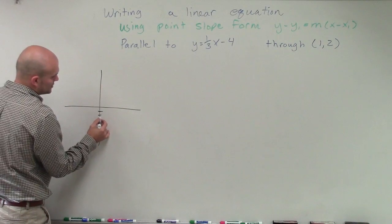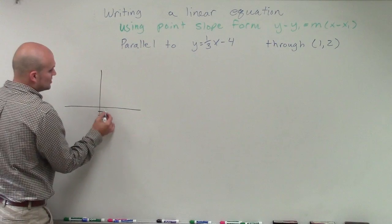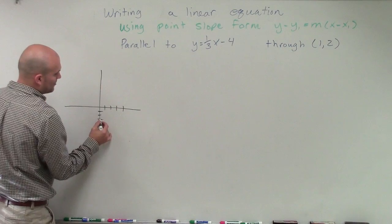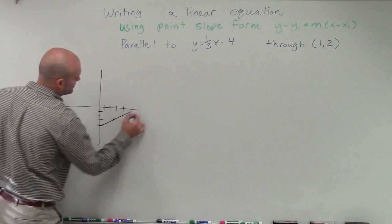We know that the y-intercept's at negative 4, 1, 2, 3, 4, and then has a slope of up 1 over 3, so up 1 over 3. So my line looks something like this.